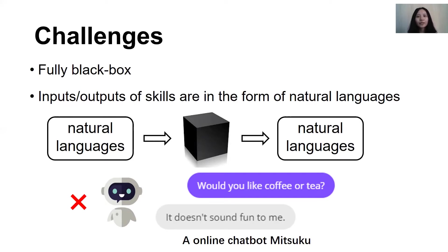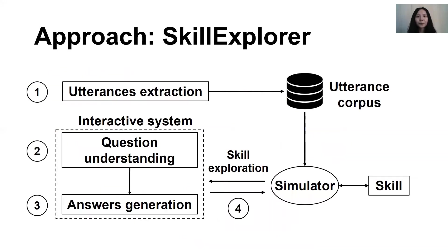A chatbot would be one of the solutions to explore the behaviors of skills. However, the questions may not be well understood by existing conversational systems. For example, 'would you like coffee or tea?' — the famous chatbot Mitsuku will answer 'it doesn't sound fun to me,' which can be understood by humans but not useful for skills. So we built an interactive system for skills called Skill Explorer, which can interact with skills automatically.